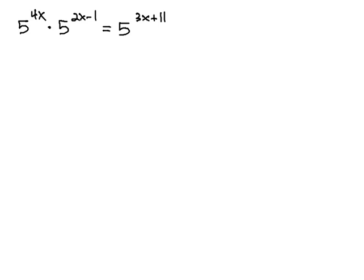So, let's look at 5 to the 4x times 5 to the 2x minus 1 equals 5 to the 3x plus 11. This one's nice because all of our bases are 5. However, we have two 5's on the left side. It'd be nice if we could combine those into a single base of 5, so we would have a single base of 5 on each side.